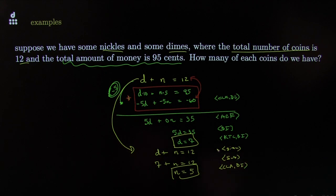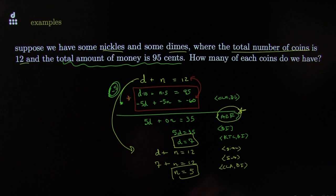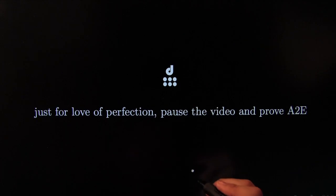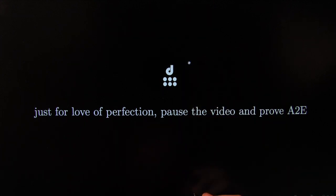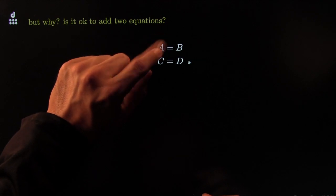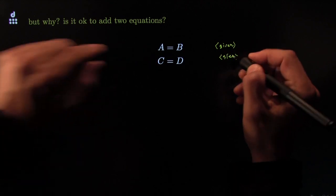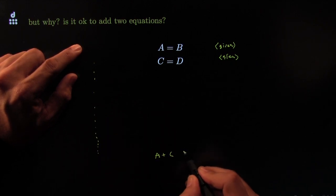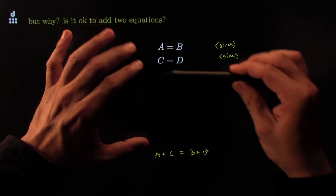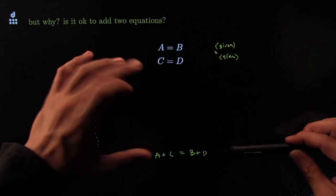Now for the nitty-gritty — for the awesomeness of creative ideas and perfection in thinking. For the love of perfection and beauty of thinking, you could pause this video and try to prove the following: if A equals B and C equals D, why is it okay to add the two equations and come up with A plus C equals B plus D? You have to use your 3.5-pound brain and creativity to fill in the gaps — going from those two given facts to this conclusion.